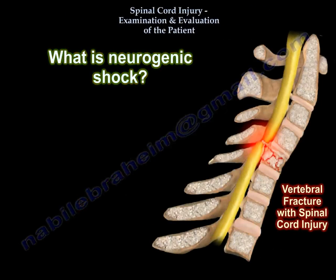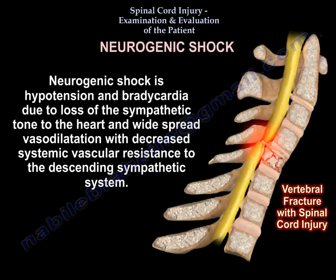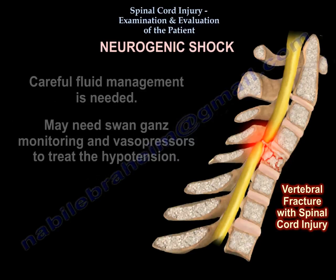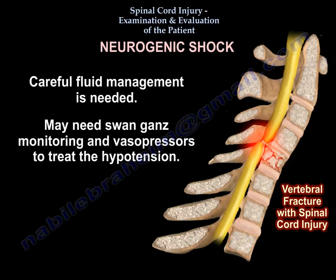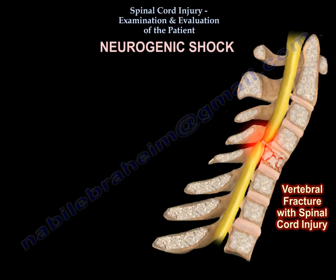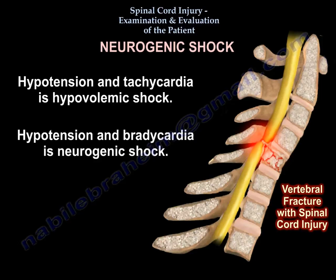Neurogenic shock involves hypotension and bradycardia due to loss of sympathetic tone to the heart and widespread vasodilation with decreased systemic vascular resistance from the descending sympathetic system. You need careful fluid management, possibly Swan-Ganz monitoring and vasopressors to treat the hypotension. Remember: hypotension with tachycardia is hypovolemic shock, while hypotension with bradycardia is neurogenic shock.